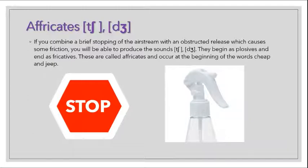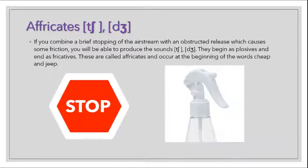The place of articulation for the sounds in 'chip' and 'j' — they are a combination of two sounds. We saw T and SH together, and D and ZH together. So when you stop the airstream and then release it through a fricative, you get an affricate. They are called affricates.